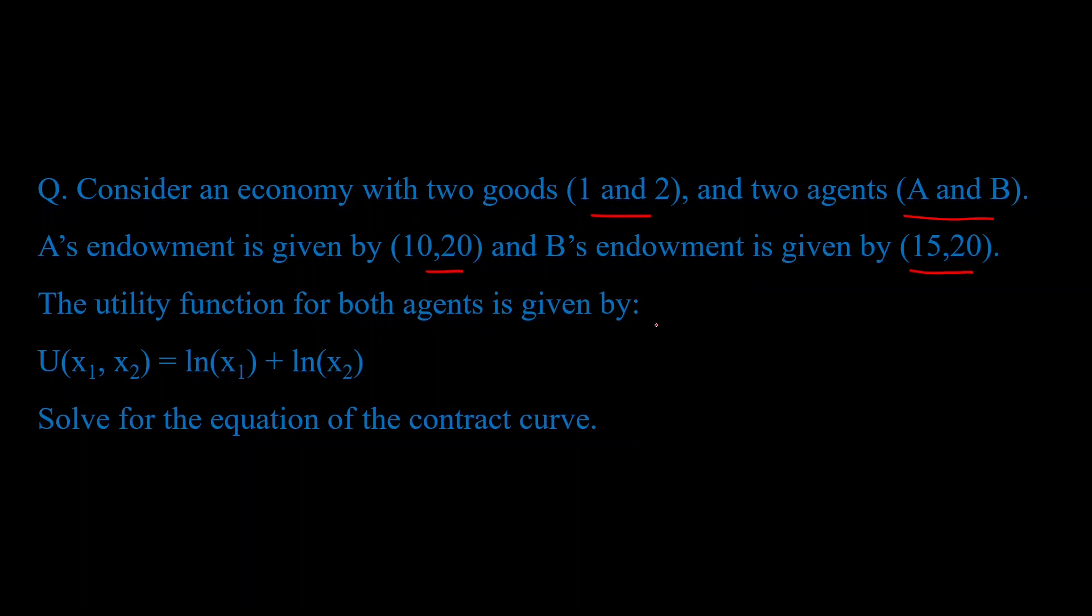Now in our Edgeworth box video we found out that the contract curve is nothing but the set of all Pareto efficient points inside our Edgeworth box. We also found out the condition for Pareto efficiency, which was that the indifference curves for both agents, in this case agent A and B, should be tangential to each other. Now if two curves are tangential, that means the slopes are going to be equal. The slope of an indifference curve is just given by its marginal rate of substitution. We can calculate that from the utility function itself. So all we have to do is equate their respective marginal rate of substitutions and we'll get our equation of the contract curve.